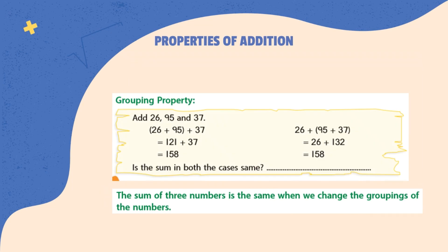Our second property is grouping property. When we add 3 numbers like in this example 26, 95 and 37, we can add 26 to 95 first and then add 37 to the result, or we can add 95 to 37 first and then add 26 to the result. Result will be same in both the case. So, the sum of 3 numbers is the same when we change the groupings of the numbers.